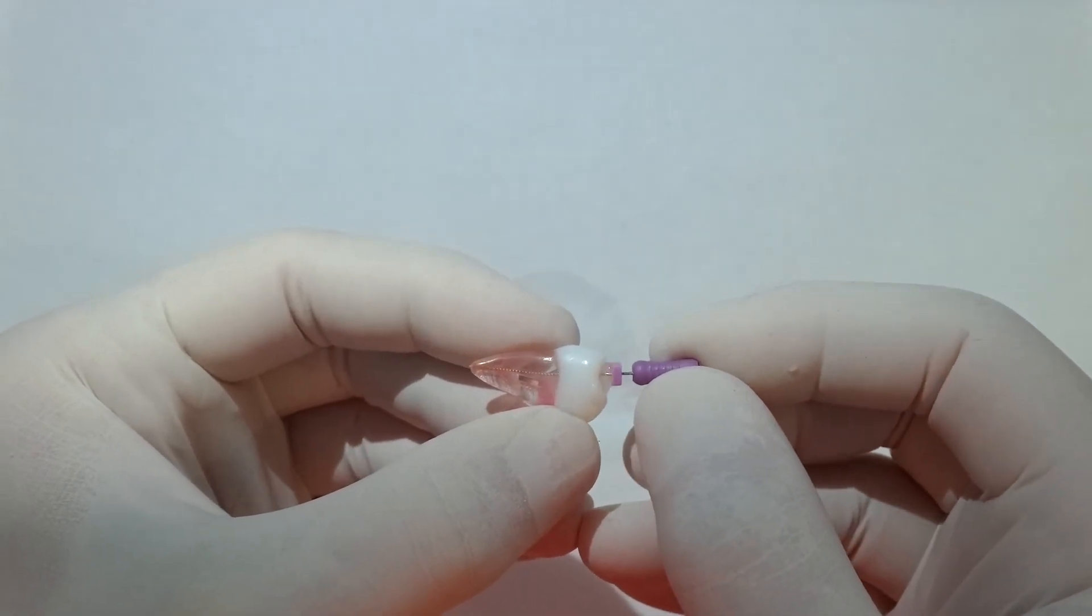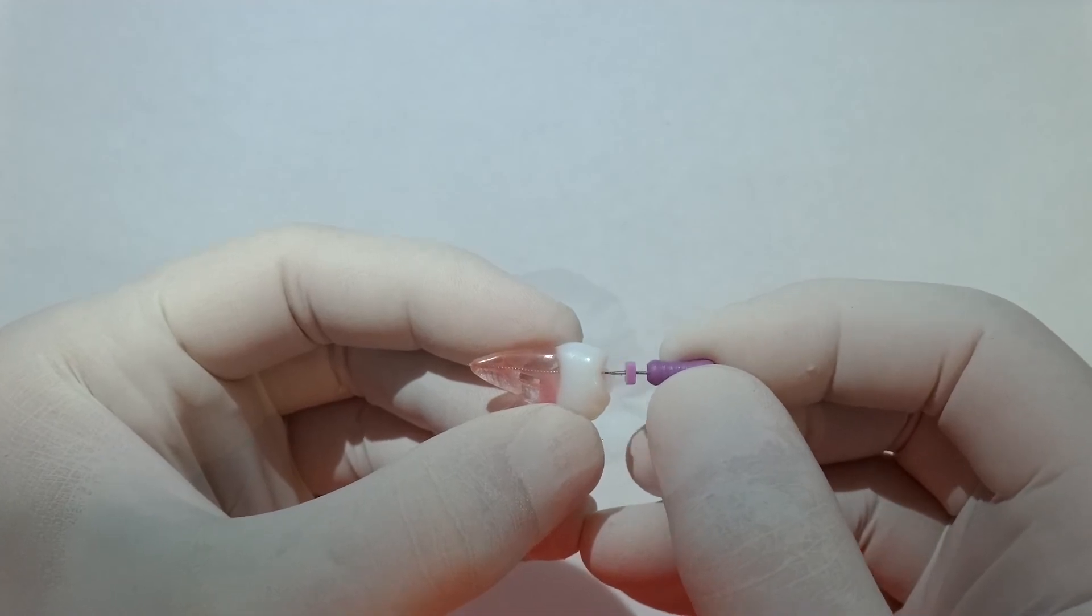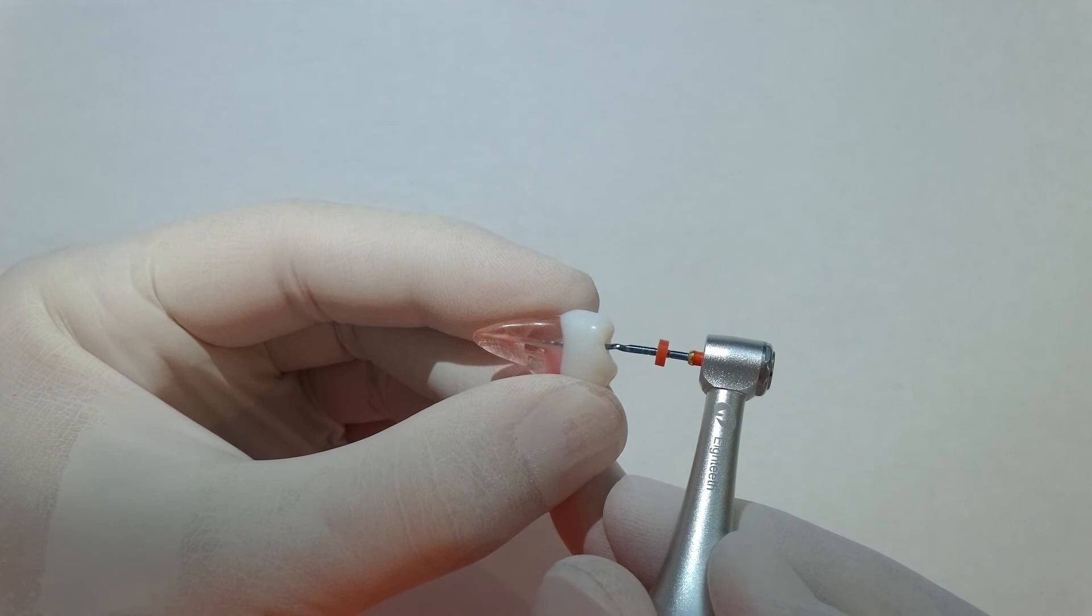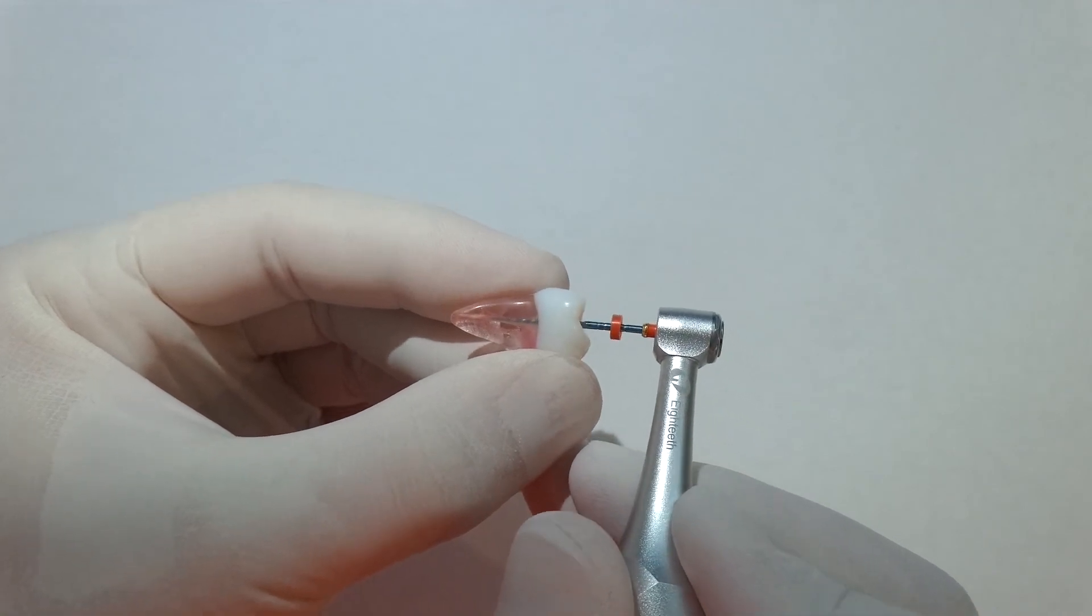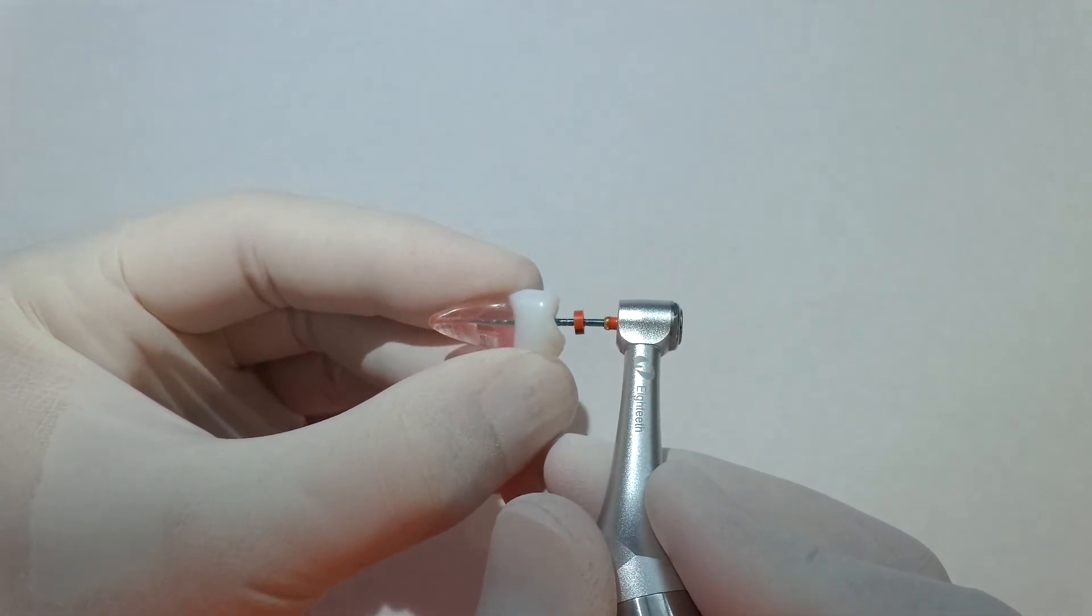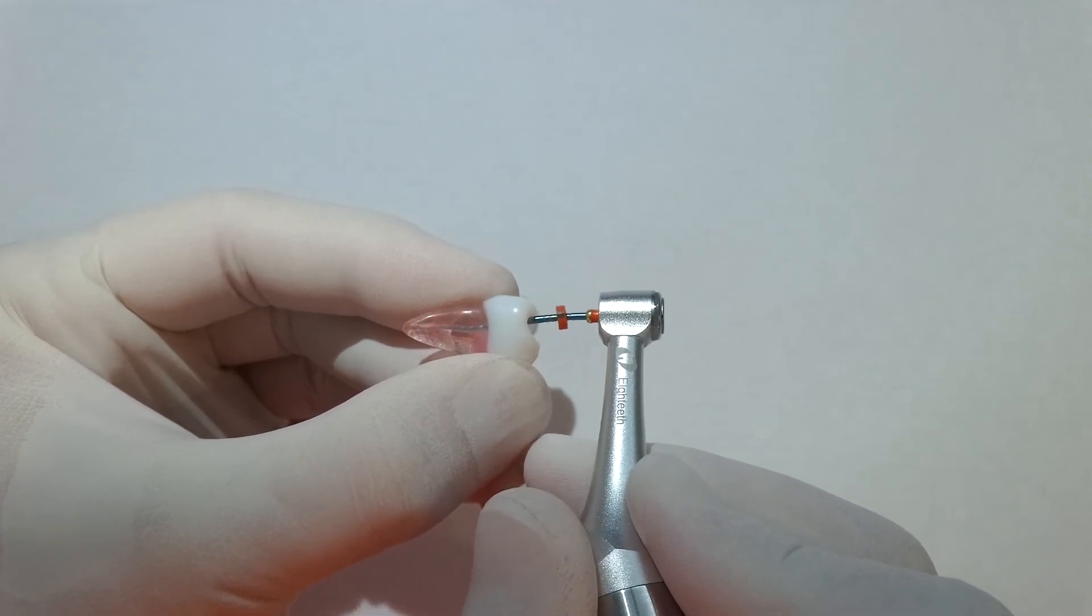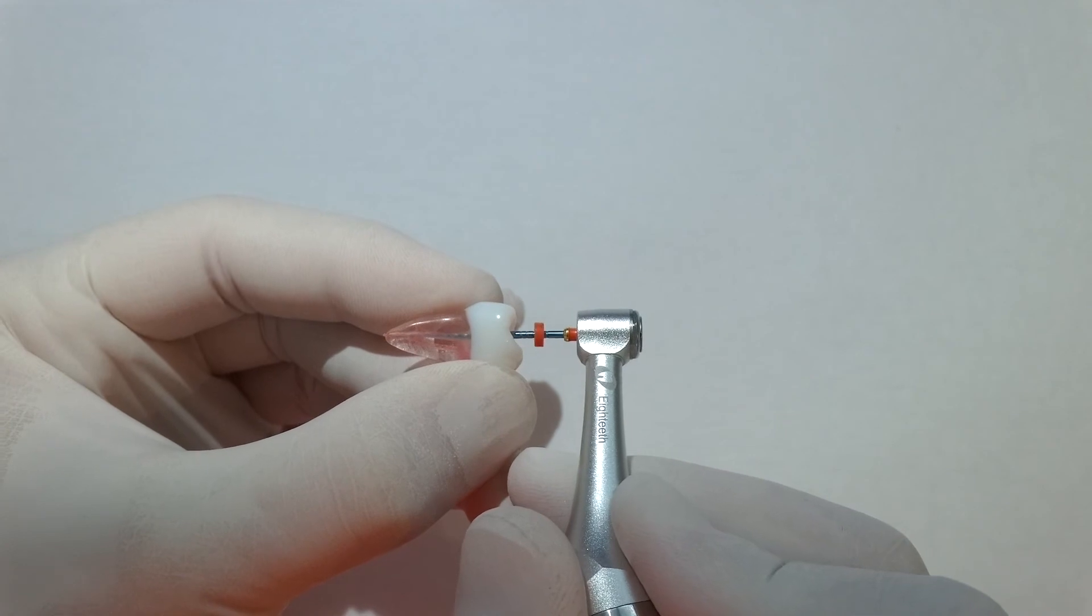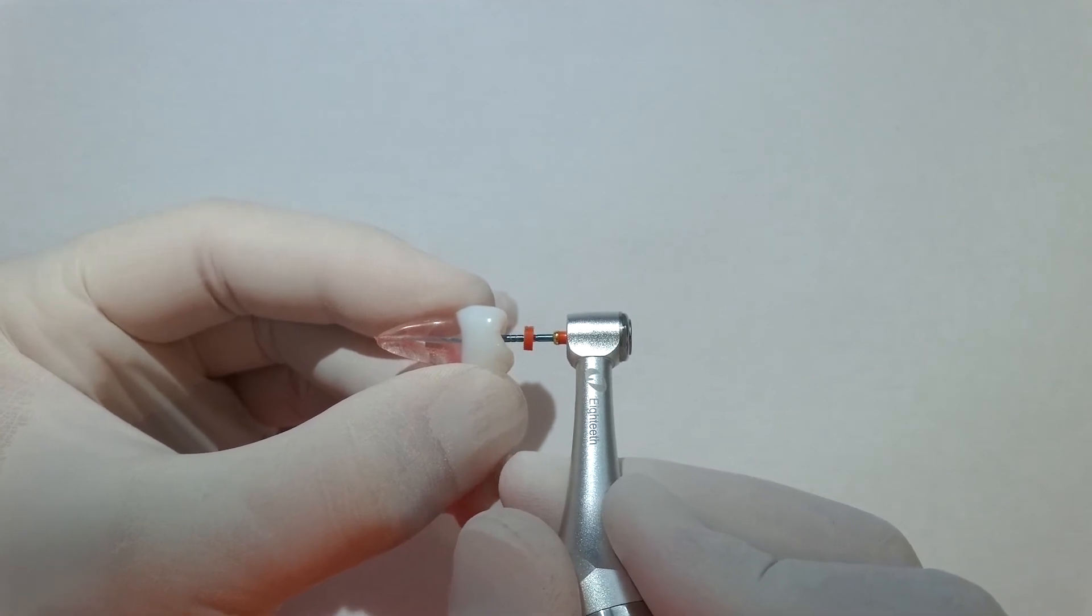This is an F2, this is a 2508, just to give us a little bit more shape apically. Exactly the same principle. We've gradually progressed the file, just gradual pecks until it reaches the full working length. Again, the same principle: as soon as that's got to length, its work's done.